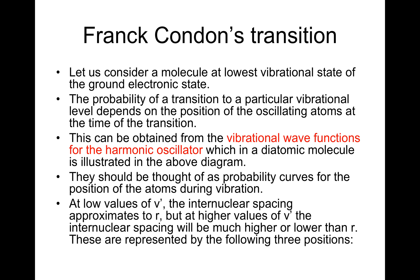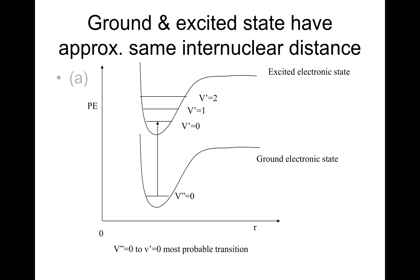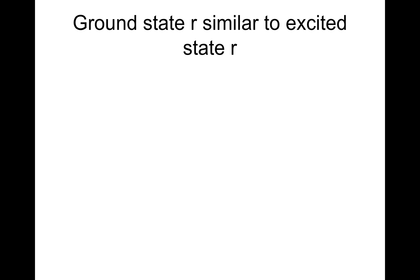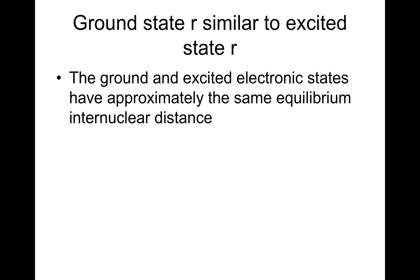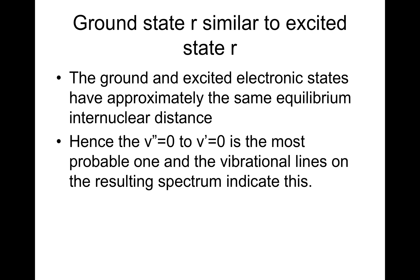At low values of v, the internuclear spacing approximates to r, but at higher values of v — the vibrational quantum number — the internuclear spacing will be much higher or lower than r. In position one (Case A), the ground state r is similar to the excited state r: the ground and excited electronic states have approximately the same equilibrium nuclear distance, and the vibrational lines on the resulting spectrum indicate this.